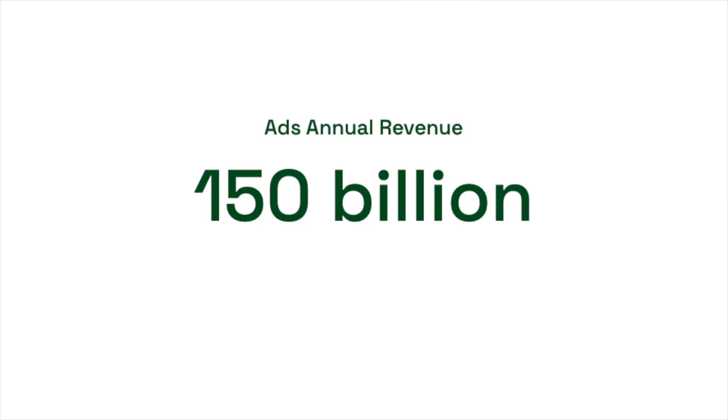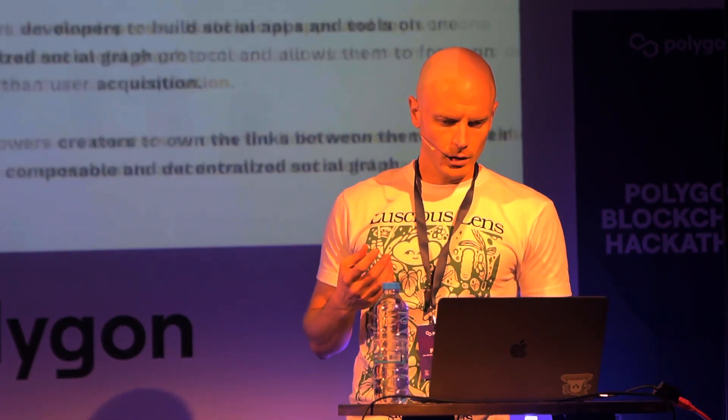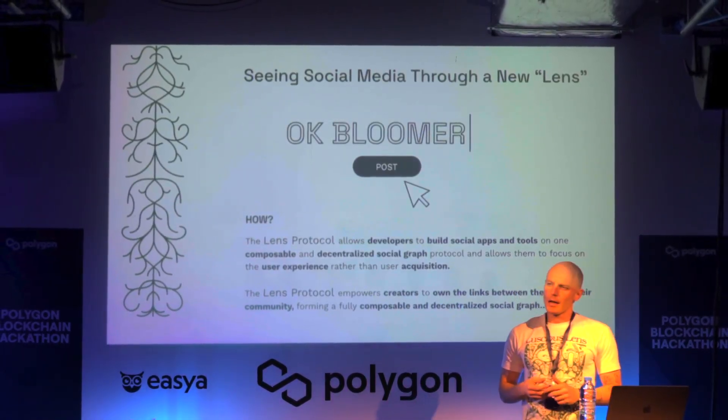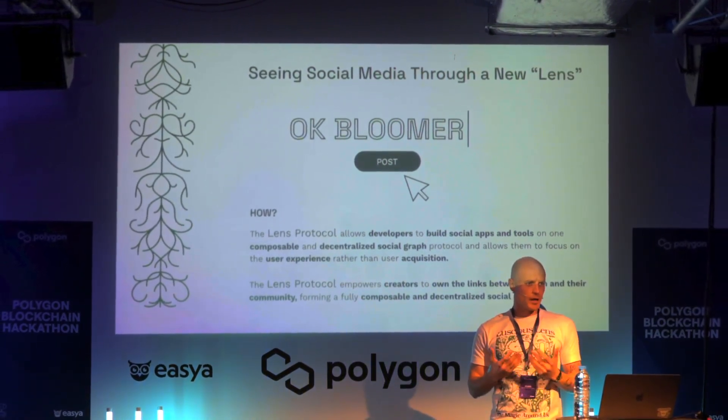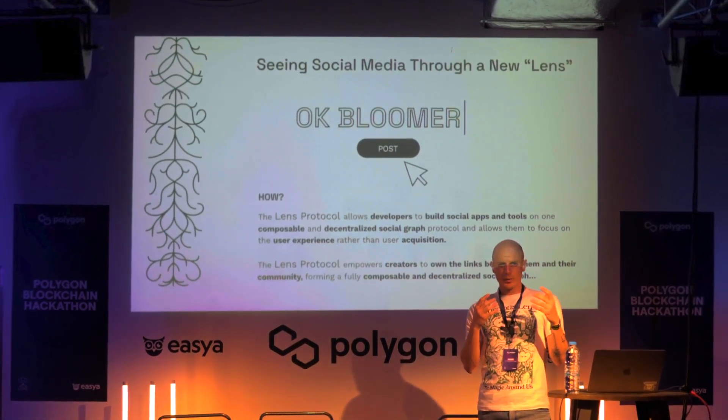Social media today generates $150 billion per year from us — monetizing our attention, our eyes on screens, our actions. A social media application is really easy to build today; a clone of these applications may take two to three months with talented developers. In this era these applications are a commodity, so most of this value should return to us because we are the network. We are presenting Lens Protocol as the base layer on which to build new social media applications — the new Twitter, the new Instagram, or whatever totally different things we can't yet imagine.